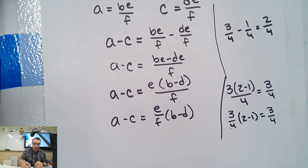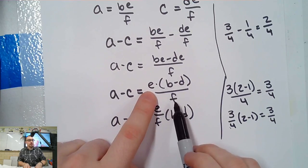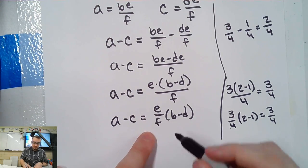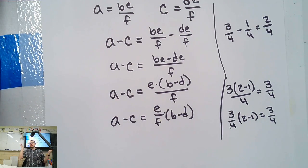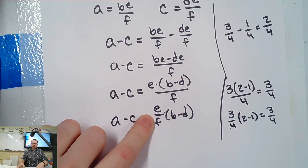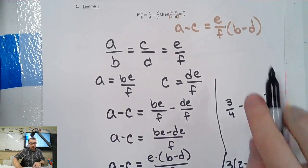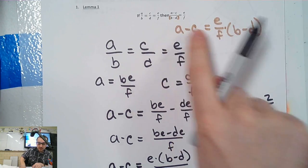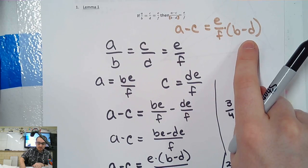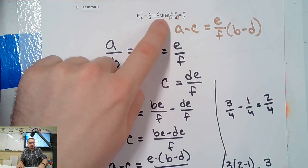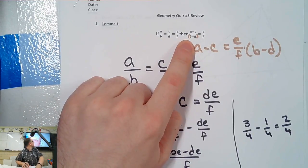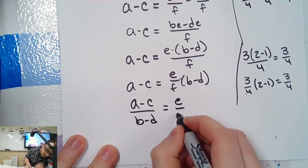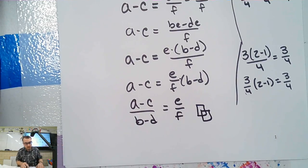What I did is I said this is all multiplication and division. So I can do the multiplication first and then divide, or I can do the division first and then multiply — it doesn't matter. So I did the division first, E over F, and then multiplied by B minus D. Totally fine. Now, how did I get from this to this? I multiplied it over. So how would I move it back? I divide it. So from here, to get what I really want, I'm going to divide by B minus D and get this.